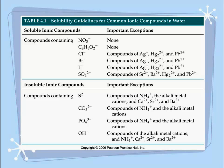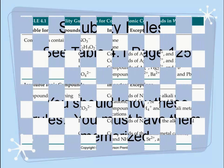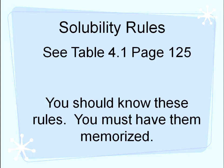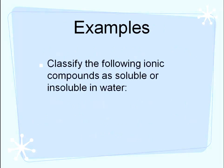You also have some alkaline earth metals in there too, like calcium, strontium, and barium, which will be exceptions depending on the anion they're bonded to. It's very important that you are able to read this table, but it's also very important that you have it memorized. You need to know what will bond with what to determine whether the product will be a solid or remain in aqueous form. Make sure you have your book open to page 125 and Table 4.1 as we go through the video.